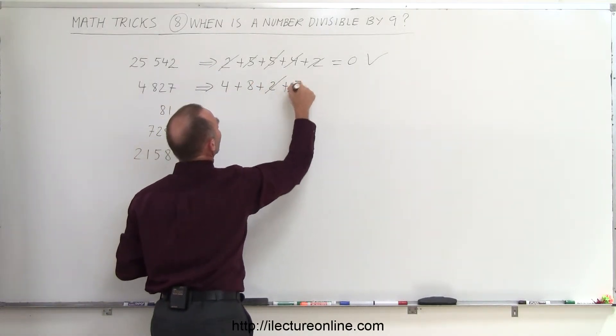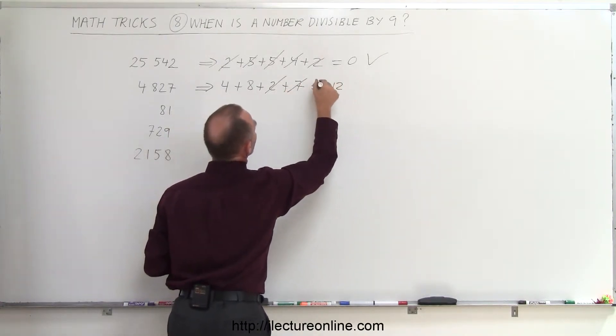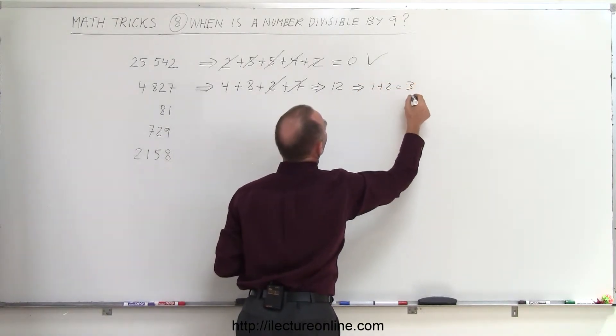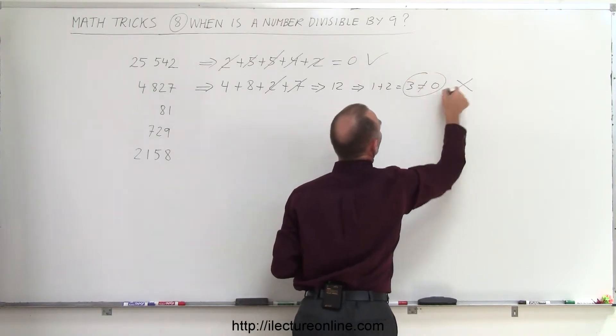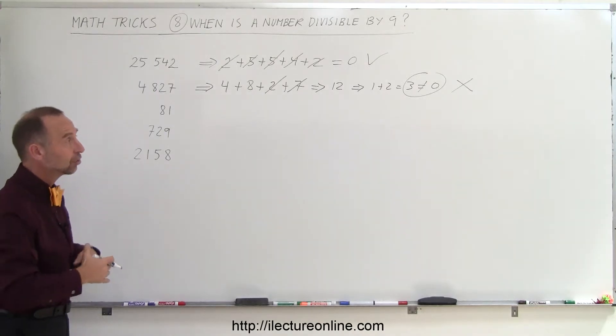2 plus 7 equals 9, so those cancel out. 4 plus 8 equals 12. And 12 can be written as 1 plus 2, which is 3. Since it's not equal to 0, it is not divisible by 9. When you add up all the numbers together, they should add up to 0.